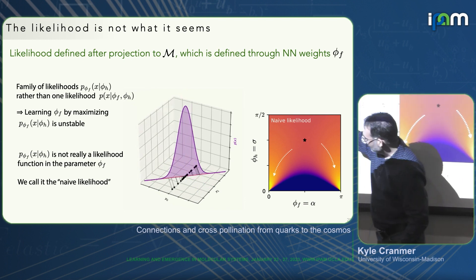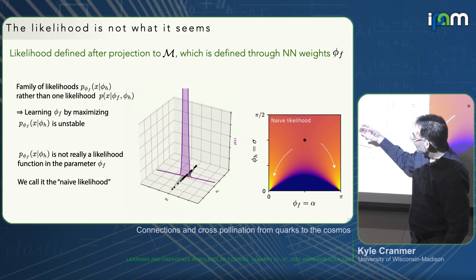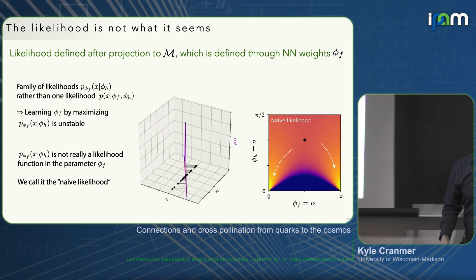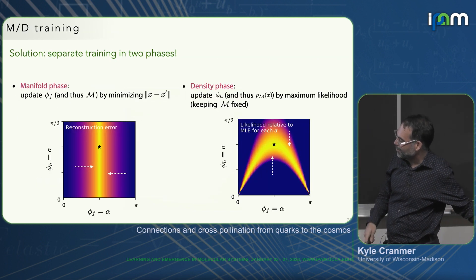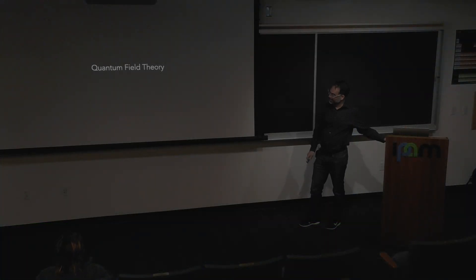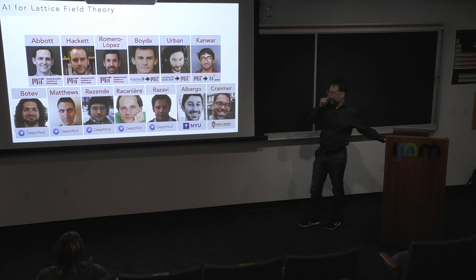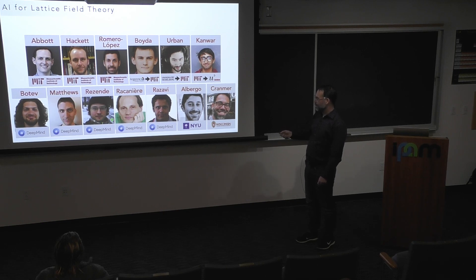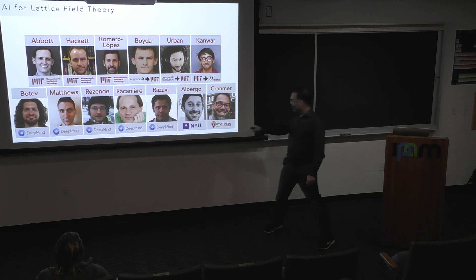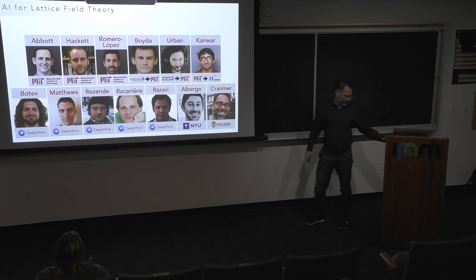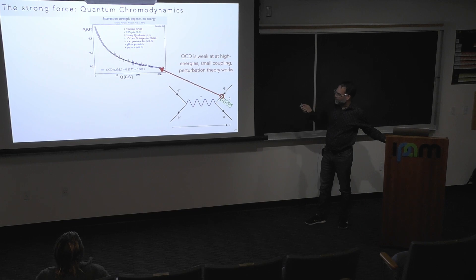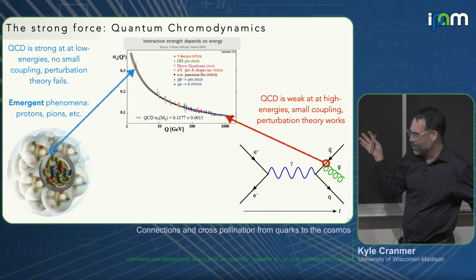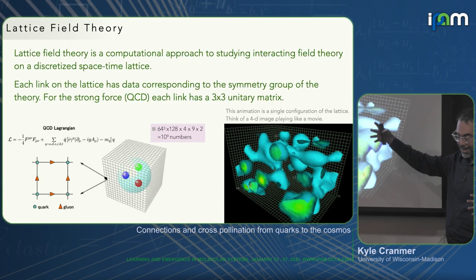Now back to QCD briefly — this is a monumental project led by the MIT crew, Phiala Shanahan's group, working also with DeepMind — Danilo, Seb, Alex Matthews, my student Michael Albergo, and myself. Thinking about the strong force at low energies, you can't do Feynman diagrams. So instead you discretize space-time onto a simple lattice. The data lives either at the lattice points or more often on the edges — the links between sites. State-of-the-art would be something like 64-cubed spatial sites by 128 time steps. At each point you have four directions — four links — and if you're doing the strong force, the data on those links are SU(3) matrices: nine complex entries, giving roughly 10^9 numbers as the state space.